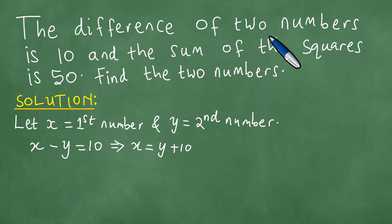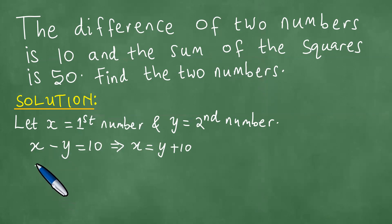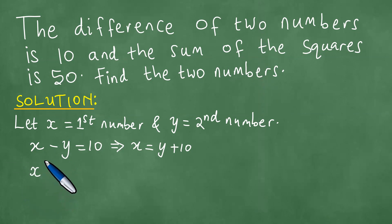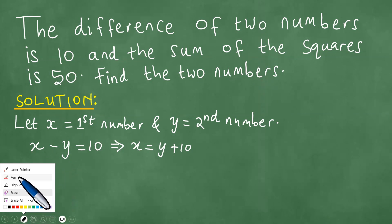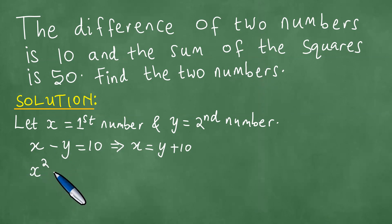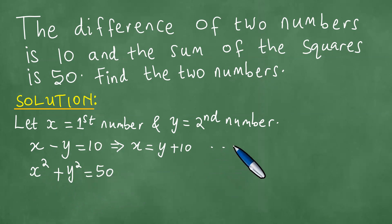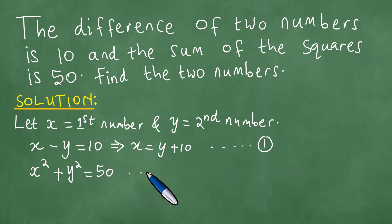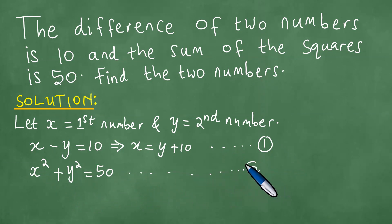The sum of the squares is 50, and that means x squared plus y squared equals 50. This gives us equation one and equation two.